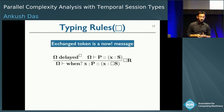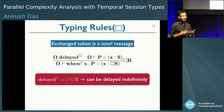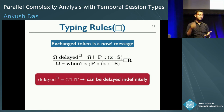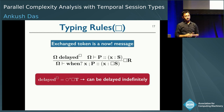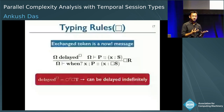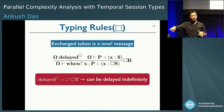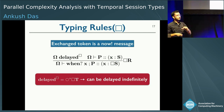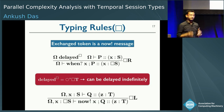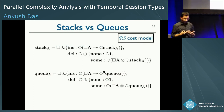The typing rules for box: the provider waits for the 'now' message — the client will eventually send it. Once received, the type of x along which the provider is offering changes from box S to S. The context must have a special form — a 'delayed box' judgment — because you don't know when the now message is coming and you have to be delayable indefinitely. The client rule is simple: it just sends the now message along x, and the type of x updates from box S to S.